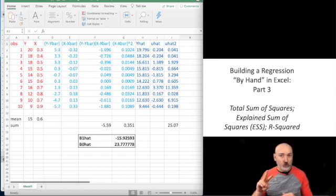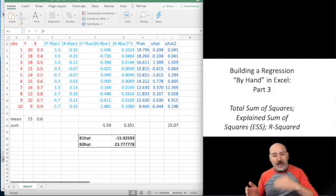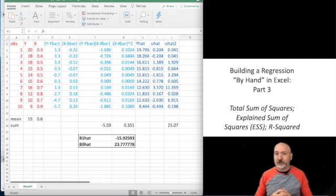So in parts one and two of this little series, we looked at first the estimation, how the B0 hat and the B1 hat, the OLS estimates of the intercept and the slope in a simple XY regression were calculated. And then using that, we walked through the calculation of the Y hat, the predicted dependent variable for each observation. From that, we calculated the residual, the difference between the actual Y and the predicted Y, Y minus Y hat.